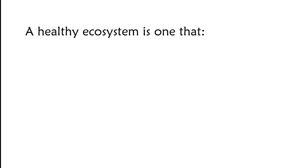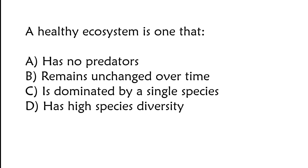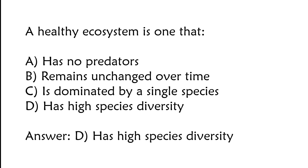A healthy ecosystem is one that: A) has no predators, B) remains unchanged over time, C) is dominated by a single species, D) has high species diversity. The correct answer is option D, a healthy ecosystem is one that has high species diversity.